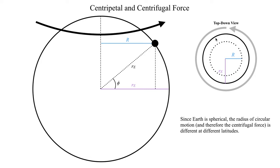The circle traced out by the Earth's rotation does in fact get larger as we go towards the equator, and gets really small as we go towards the poles. The magnitude of the centrifugal force — and also, as we'll see later, the Coriolis force — does in fact depend on what latitude you're at on the Earth.